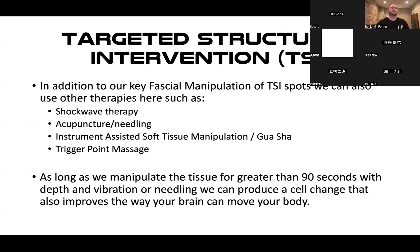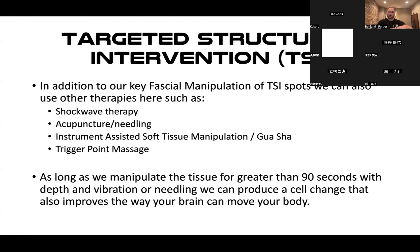As long as we manipulate the tissues for greater than 90 seconds with enough depth and vibration, heat, or needling, we can produce that cell change that will improve the way the brain can move the body. We also want to use other techniques in this area: shockwave therapy, acupuncture or dry needling, instrument-assisted soft tissue therapies, and trigger point massage.